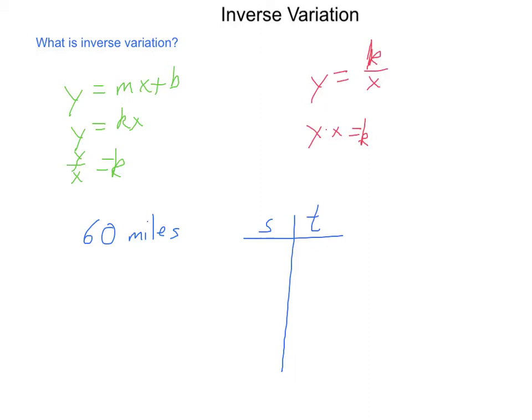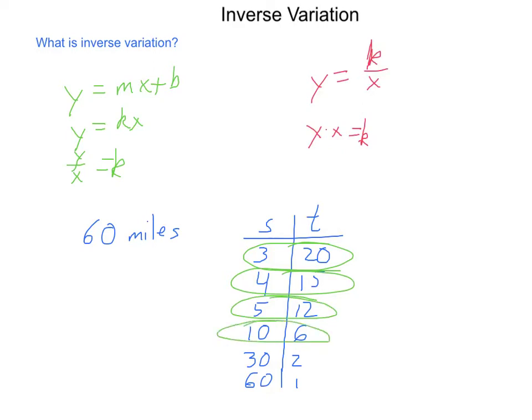So, if you travel at 3 miles an hour, it will take you 20 hours to get there. If you travel at 4, it will take you 15 hours. If you travel at 5 miles an hour, it goes to 12 hours. 10 miles an hour is 6 hours. 30 miles an hour will take you 2 hours. And at 60 miles an hour, it will take you 1 hour. So, each of these situations, if we were to find the product of each line, they will always have the same product of 60. This is inverse variation. As our speed increases, the amount of time it takes to complete the voyage will decrease.